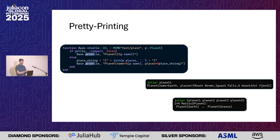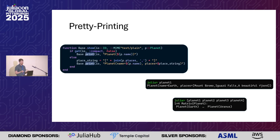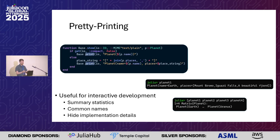Inside the show method, you build a string representing how you'd like to render your struct in the REPL. Here I prepend the field name before the value of that field, which is nicer when you don't want to keep track of argument order. So we can print planet one and see that the name is Earth and here's the list of places, rather than having to remember that the first argument is the name and the second is the list of places. With the IO context that gets passed in, there are also conventions around things like truncation and array printing, which gives you the nice array printing shown in the bottom right.